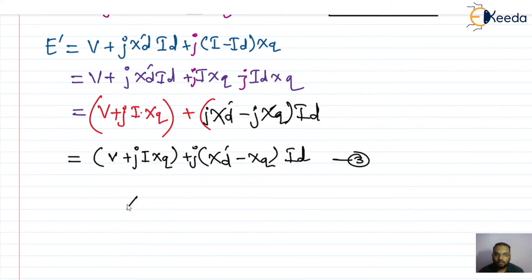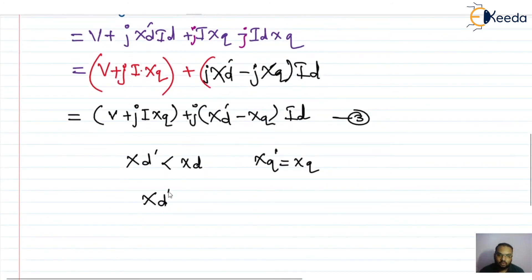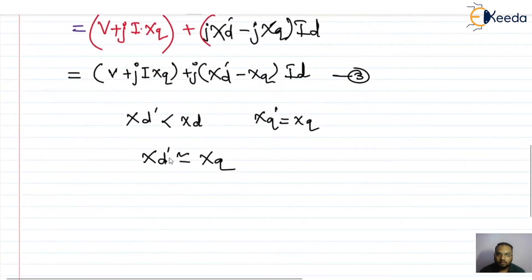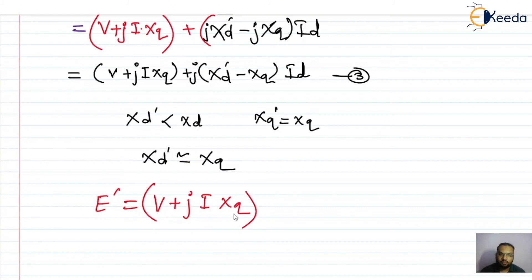Under transient condition, Xd' is less than Xd, and Xq' equals Xq. Now if we compare Xd' with Xq, they are approximately equal. If we apply this assumption to equation number three, the term j·(Xd' − Xq)·Id becomes zero, and we are left with the simplified expression: E' = V + j·I·Xq.